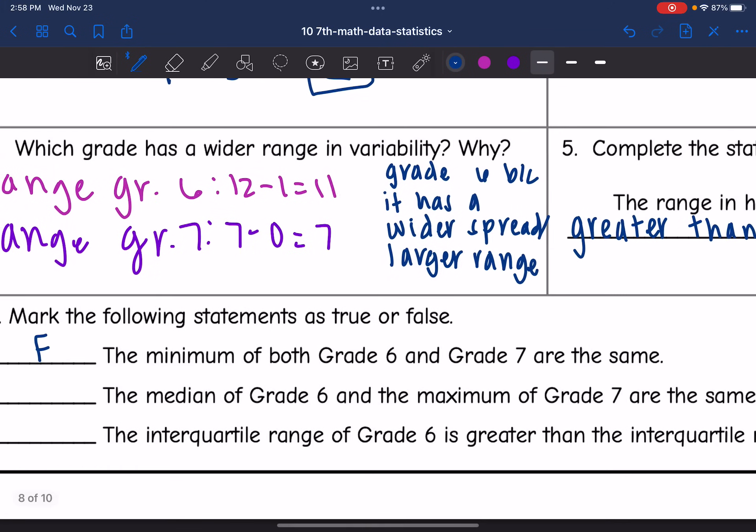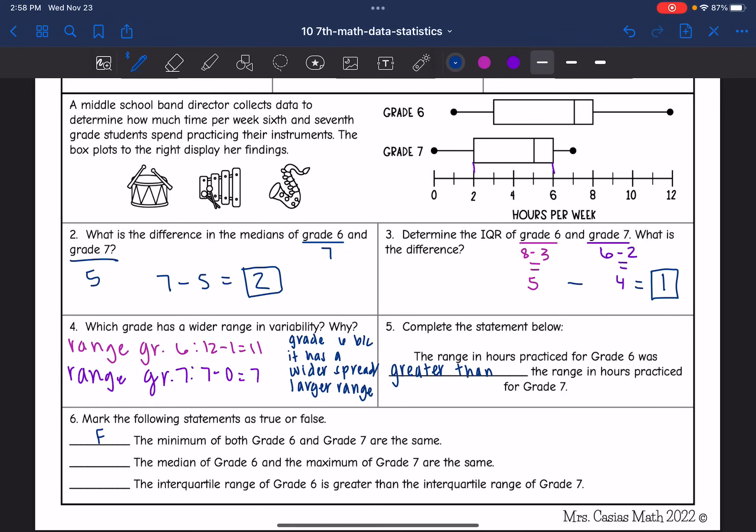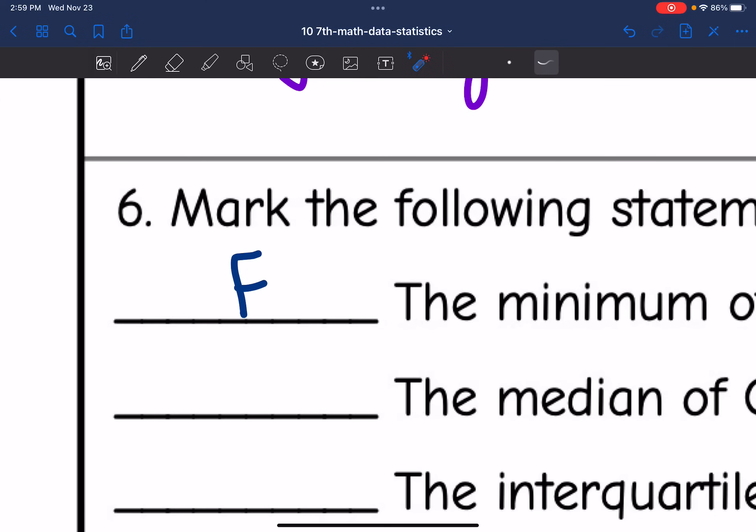Then the second one says the median of grade six and the maximum of grade seven are the same. That would be true. The median of grade six is right here in line with the maximum of grade seven. They have that same number of seven. So this one is true.